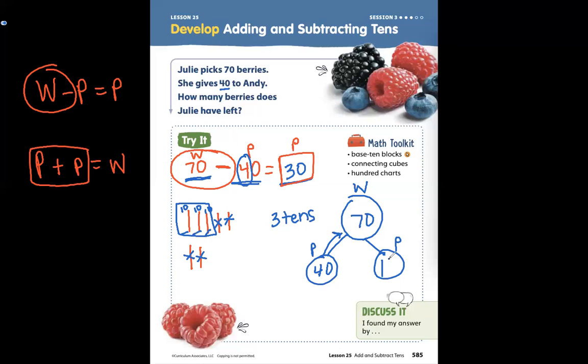40, 50, 60, 70. What is the value of those three 10 sticks? 10, 20, 30. 30 is the value. So you could do 40 plus what equals 70. This is our mystery number. 40, 50, 60, 70. 40 plus 30 equals 70.